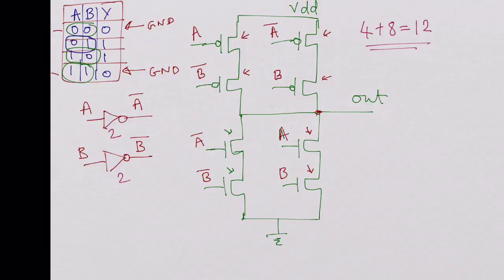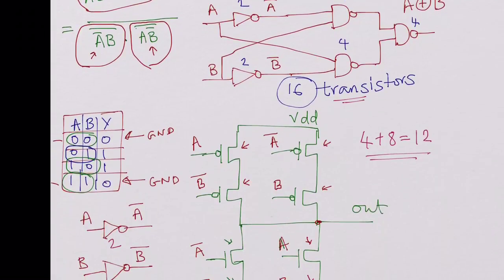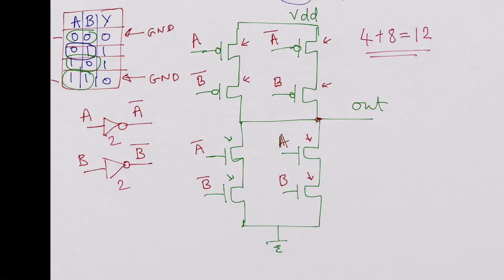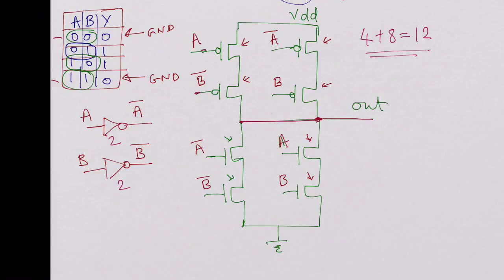So the total transistor count for this approach: two here, two here from the inverters, and eight for the main logic — four plus eight is twelve transistors total to construct the exclusive OR gate. When using gates we needed sixteen transistors, whereas building directly with transistors we use only twelve. The structure uses two P-channels in series with two such branches, and two N-channels in series with two such branches, all shorted at the output node. This is how the exclusive OR gate is constructed.